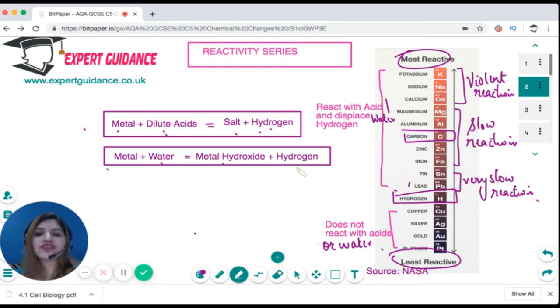And we will see the elements at the top will show violent reactions, the elements in the middle will show slow and very slow reactions, and the ones at the bottom will not react with acids or water. So depending on the observations we see with acids or water, we can place the elements on the basis of their reactivity and we will get a series like this.